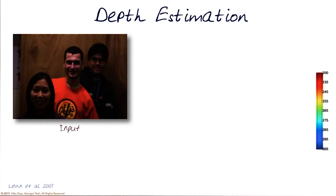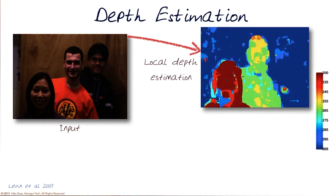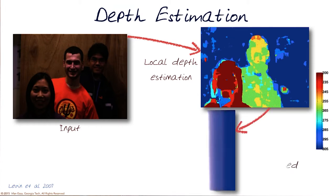So what can we do with a sensor like this? Let's first talk about depth estimation. Using this sensor and this kind of a coded aperture, they were able to compute depth from a single image just using this coded aperture. This is the output they would get — not perfect, but this is what you get out of a single image.